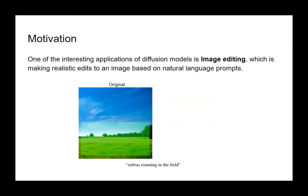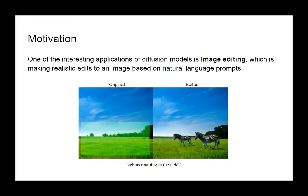One of the interesting applications of diffusion models is image editing or image inpainting, which involves making realistic edits to an image based on natural language prompts. Here, a generated landscape image has a selected region, and given the text prompt 'zebra swimming in the field,' the diffusion model can produce an edited image keeping the same style as the original.